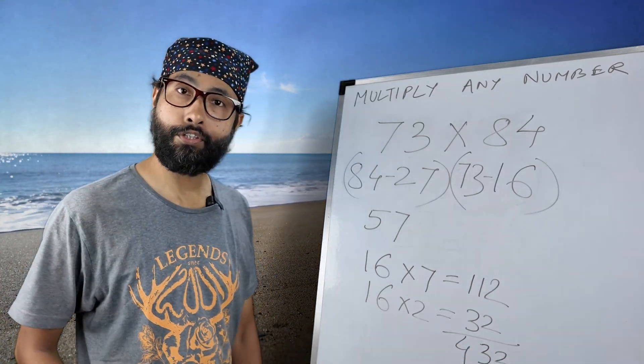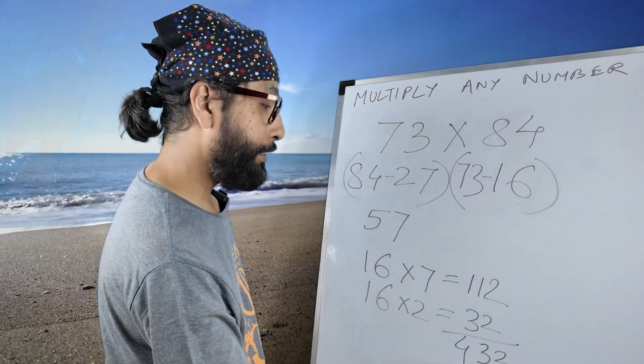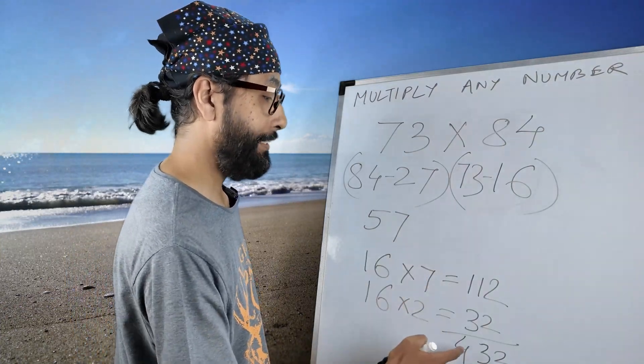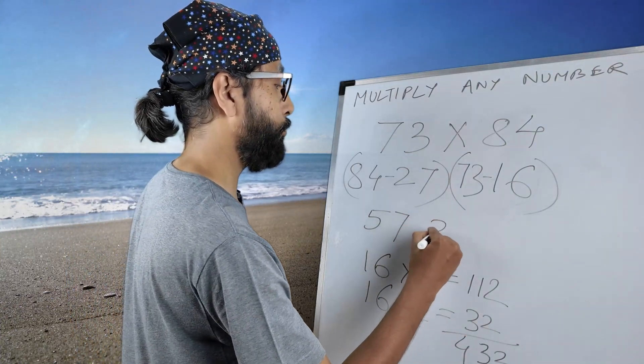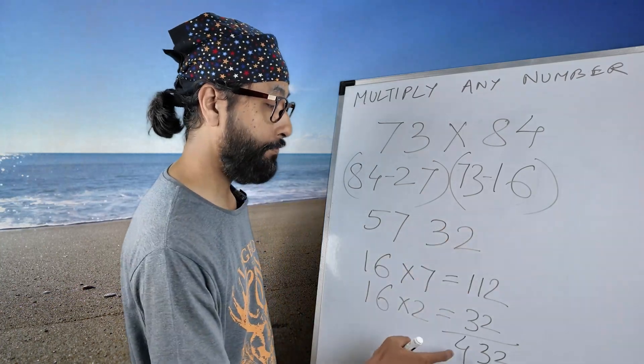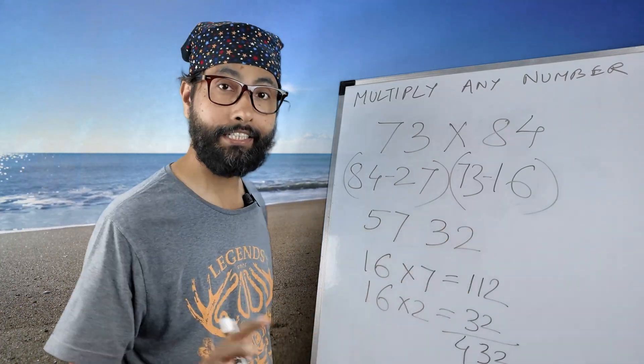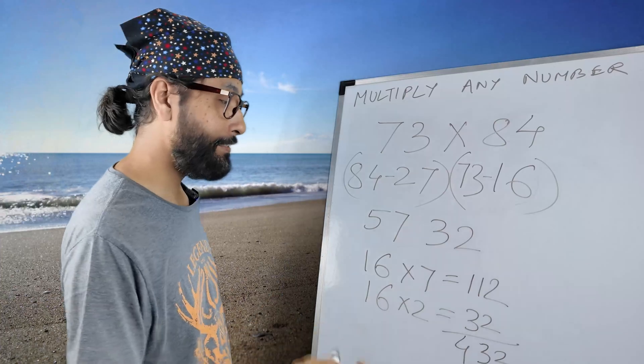Now this 432 will be added - I mean, actually this 32 is fine, no problem with this 32 - but this 4 will be added to this 57 directly.